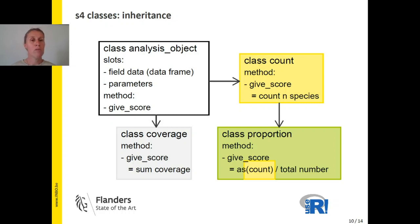As I mentioned in the beginning of this slide, in the class analysis object, we cannot add an actual implementation for the method get score because it's different in the inherited classes. And because of that, we don't want users to be able to make an instance of the class analysis object. We can do this by defining analysis object as a virtual class.